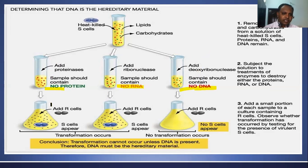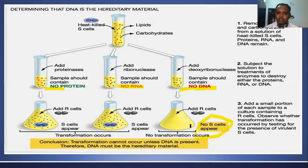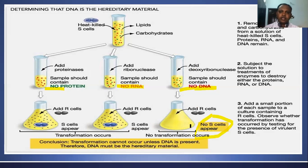After enzyme treatment, live R cells were injected with each fraction. S cells appeared in the first two cases because DNA was not disturbed, but in the third case no live S cells appeared because DNA was destroyed. When injected into mice, the mice died in the first two cases but not in the third. From this experiment they concluded that the transforming agent in Griffith's experiment — the substance responsible for transformation of live R strain into live S strain — was the DNA molecule, providing evidence that DNA is the genetic material.